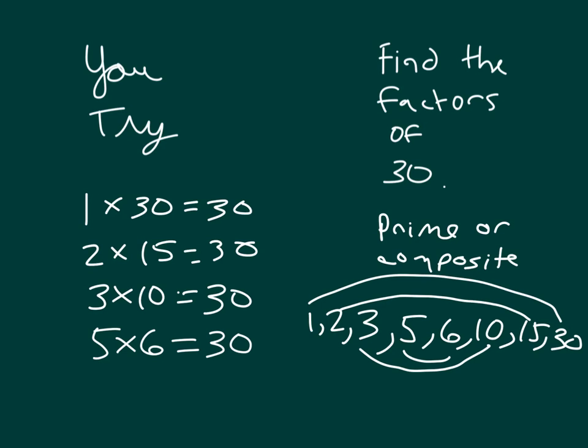There's 1, 2, 3, 4, 5, 6, 7, 8 factors total. Did you say whether it was a prime or composite number? 30 is a composite number. These right here are all the factors of 30.